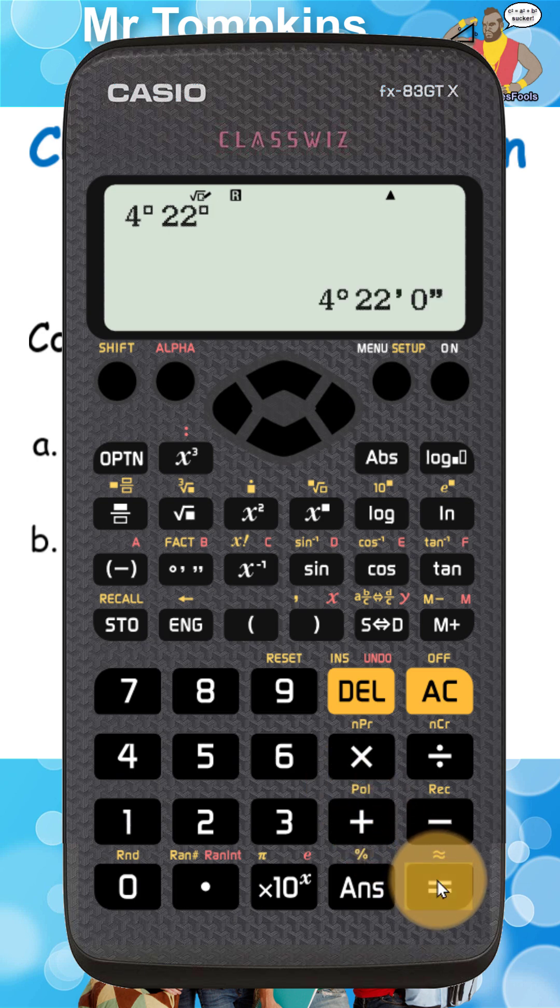Now on the top display, it just draws another circle. But when I press equals, you'll see it converts it into 4 and then a little circle, and then 22 and a dash, and then 0 and a double dash. Now that's the notation for 4 hours, 22 minutes and 0 seconds.